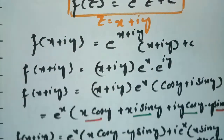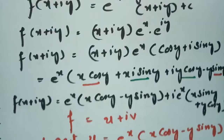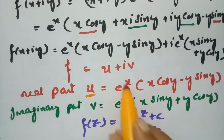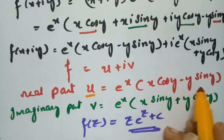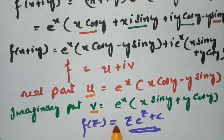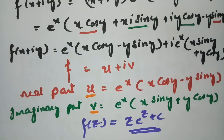Since z = x + iy, substituting and splitting gives us: the real part u = e^x·(x cos y − y sin y), the imaginary part v = e^x·(x sin y + y cos y), and the analytic function f(z) = z·e^z + c. Thank you so much for watching — please share with your friends, subscribe to the channel, and practice so you can definitely score more.